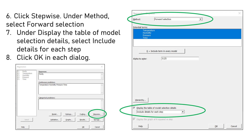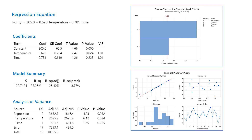Stepwise regression in Minitab, particularly forward selection, optimizes model complexity by iteratively adding significant predictors. Click Stepwise. Under Method, select Forward Selection. Under Display the Table of Model Selection Details, select Include Details for Each Step. Click OK in each dialog. Forward selection methodically builds models from the ground up, ensuring each added variable contributes meaningfully to the model's predictive power, enhancing model efficiency and interpretability.